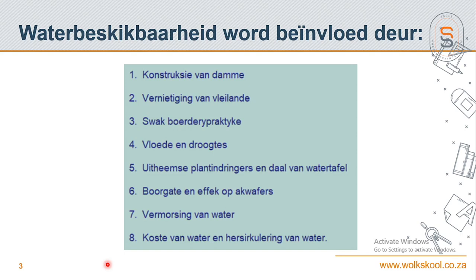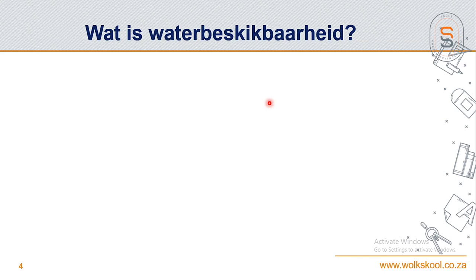The context here is that you look at the constructie of damme and vleiland - it is about the beskikbaarheid of water. What is water beskikbaarheid? Water is for our term - it is there, although in the last few years we have learned how important water is. When the water is off and you have a day of no water, and the water pipe is dry, then you realise - with elektriciteit you can still use a gas stove or LED light, but for water you have no alternative.